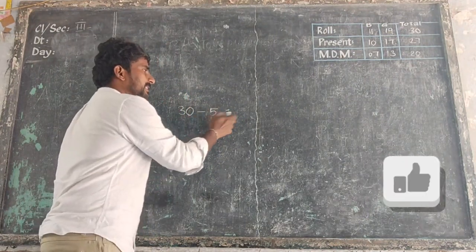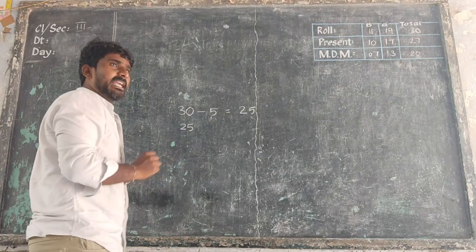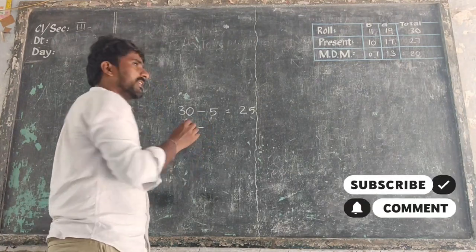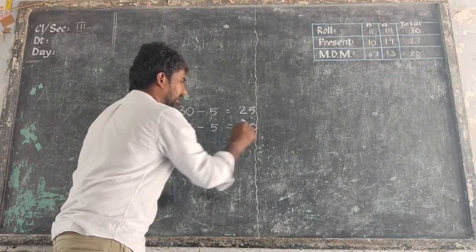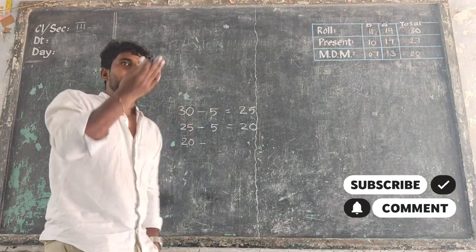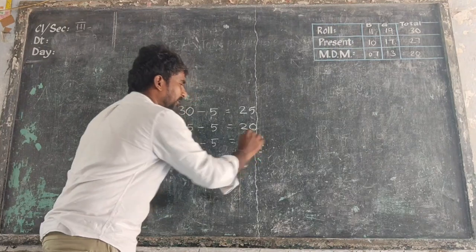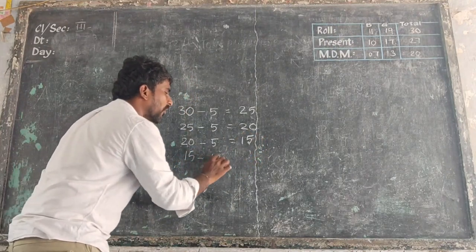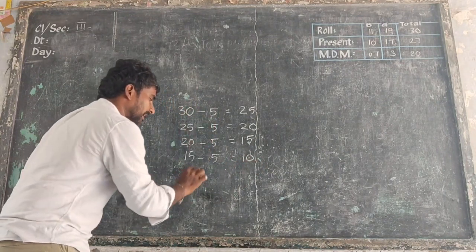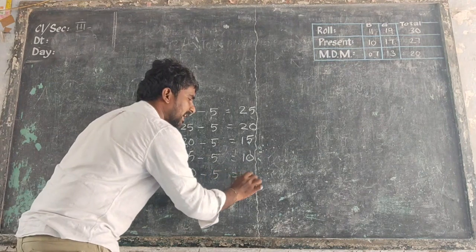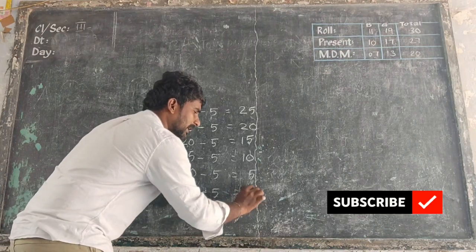1 person gets 5 chocolates. How many chocolates do you have? 25. Next — 25. So, 5. How many chocolates do you have? 5. So, 5. 20. 20. 15. 15. Again, you have 5 chocolates, you have 1 person. 15, 10, 5. 6. How many chocolates are left? 1.